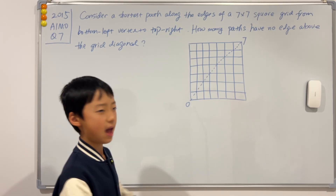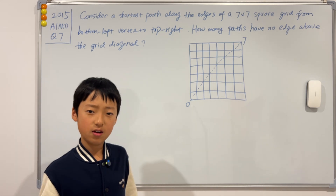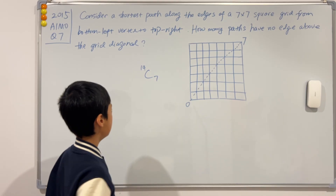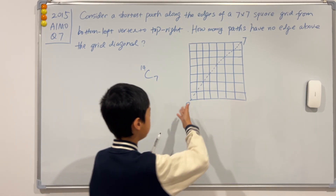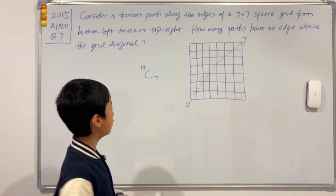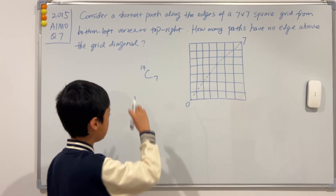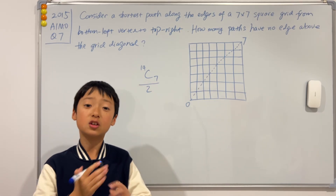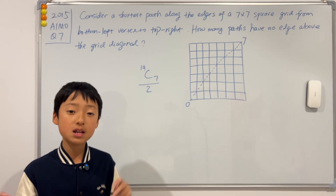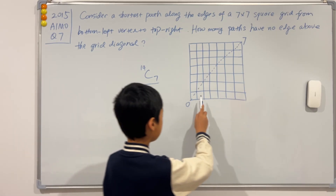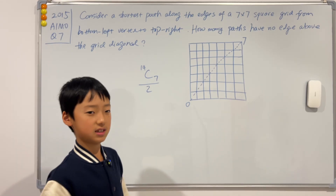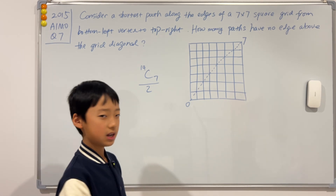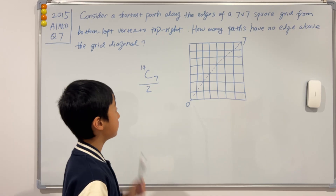If we had no restriction, then we can easily tell that the answer would just be C(14,7). We see that this restriction just cuts the whole thing in half, so would it be that easy if the answer is just C(14,7) over 2? Actually not, because there are so many more paths that intersect this diagonal, and we can intersect it many times — once, twice, or any number of times.